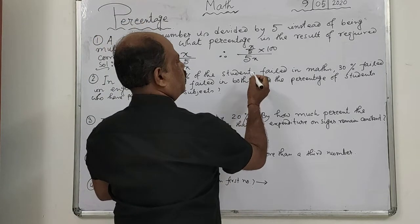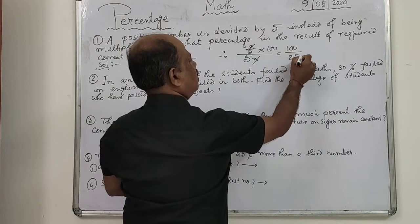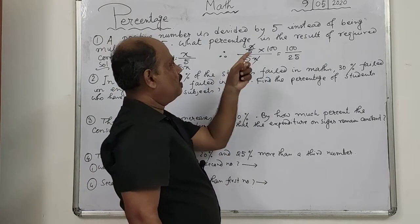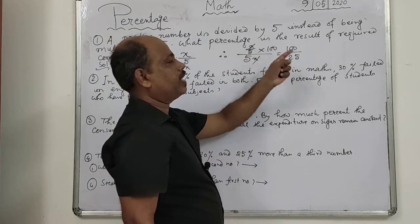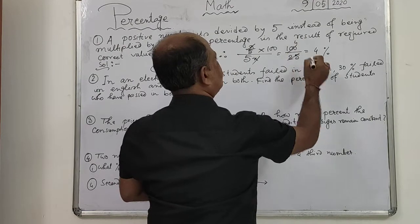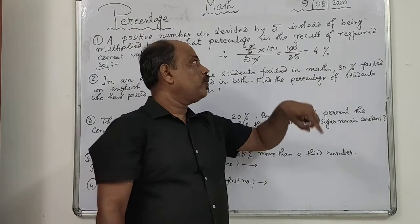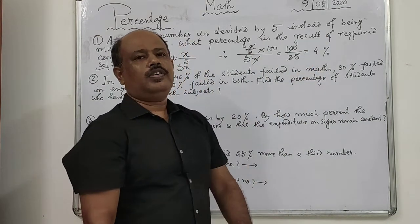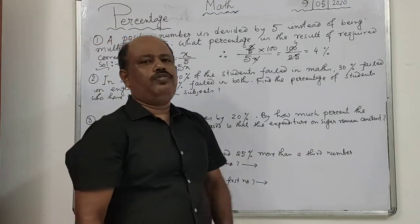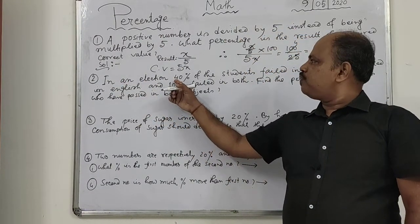After multiplying, x and x are cancelled. Therefore 1 divided by 25 — these two fives are multiplied, giving 25. So you get 4 percent. Your result is 4 percent of the required correct value. First question done.